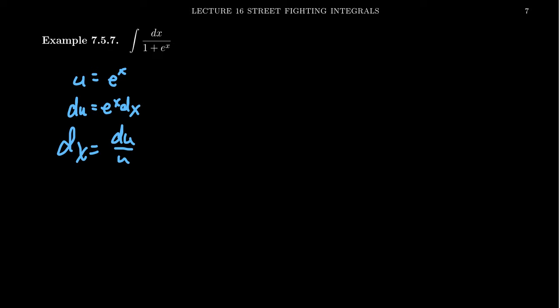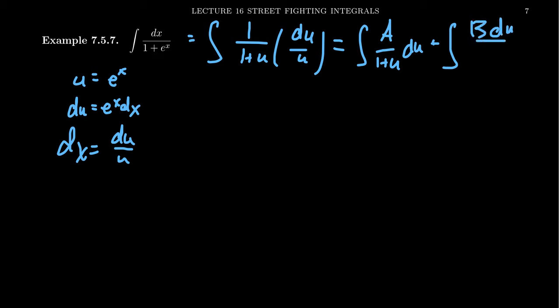And so what we could do then is we could then get an integral that looks like, well, the dx, we'll do the first one first, we get 1 over 1 plus u times dx, which becomes du over u. We could do some type of partial fraction decomposition here, for which case your integral, we're looking for a over 1 plus u du plus the integral of b du over u, like so.